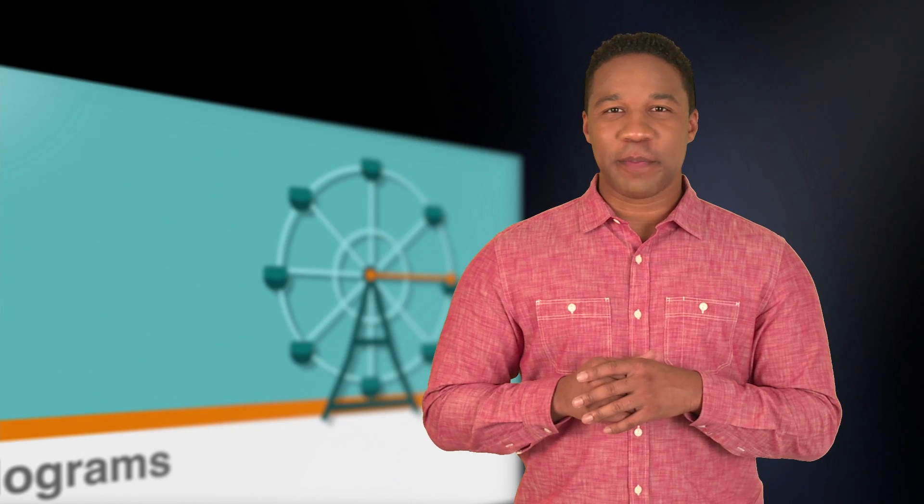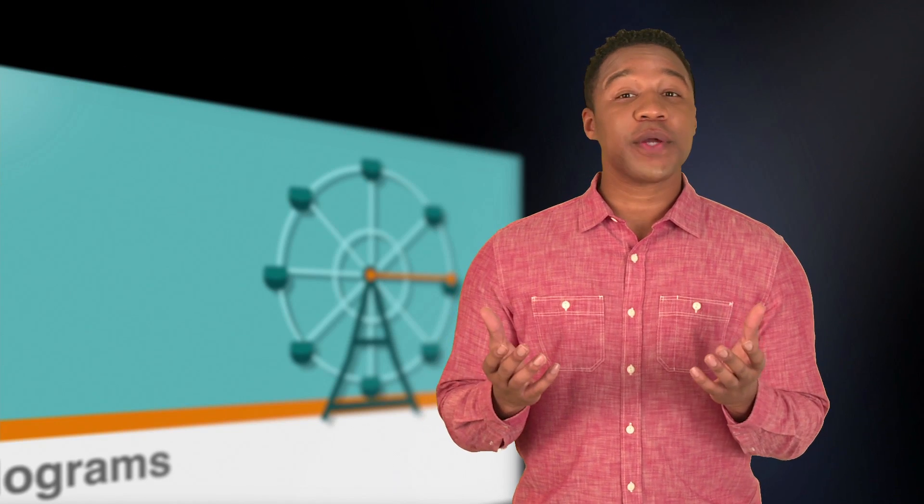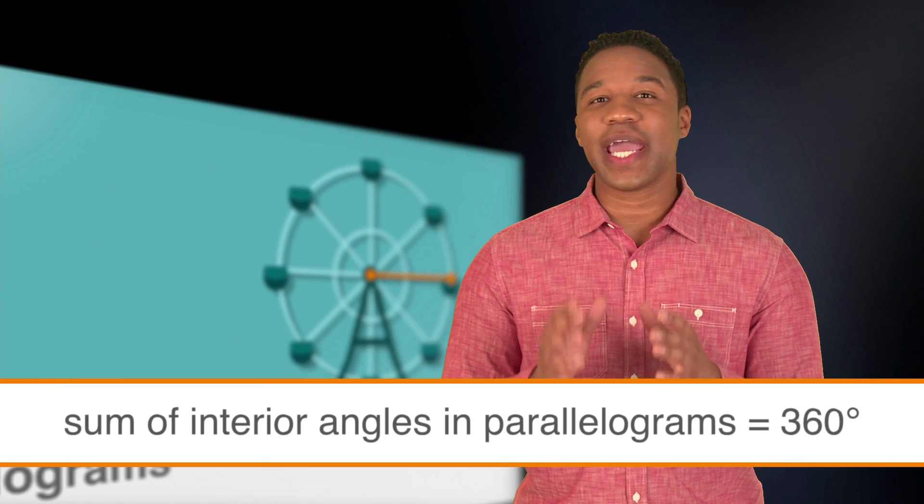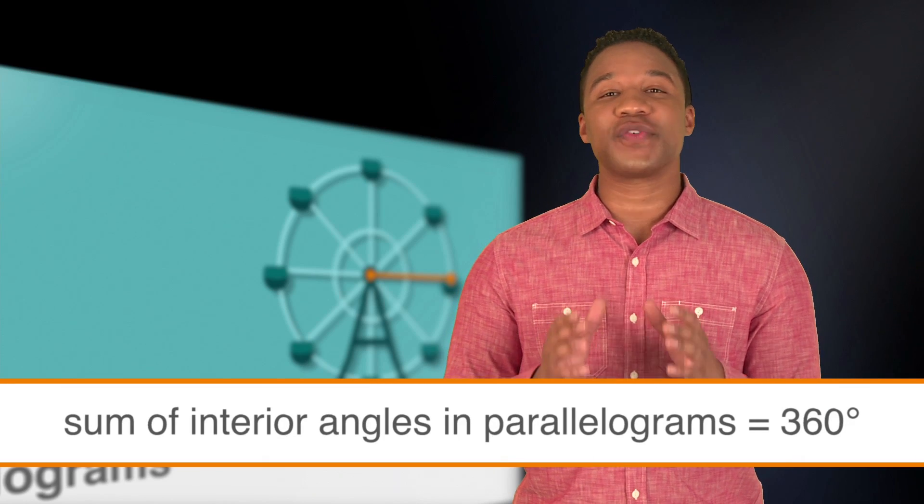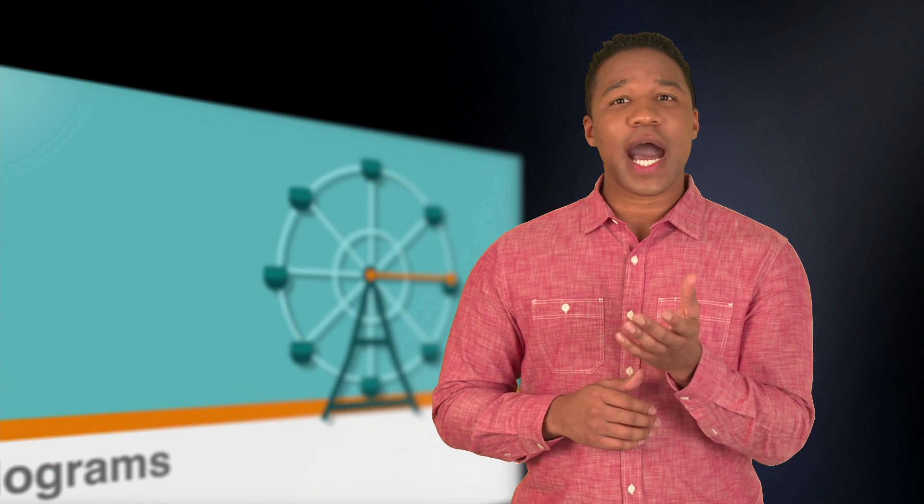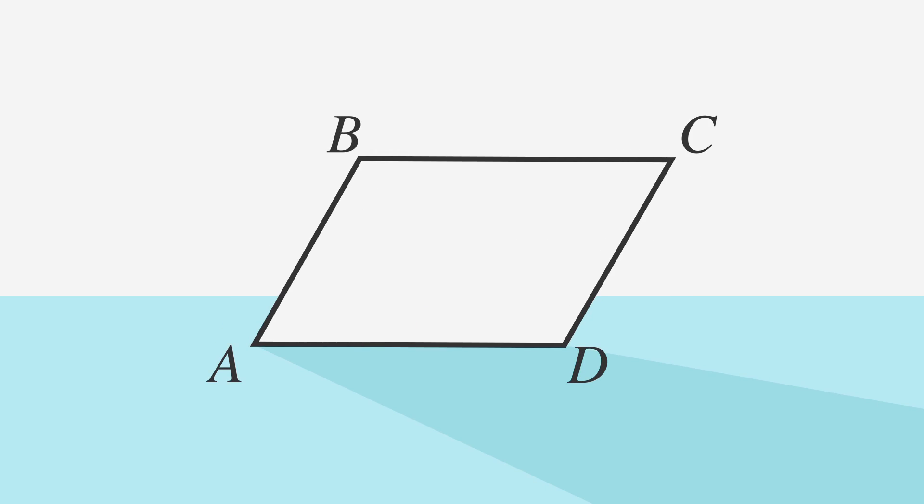One more thing we know about parallelograms. Because all parallelograms have 4 sides, their interior angles all add up to 360 degrees. Also, opposite angles in a parallelogram are equal. So if the measure of angle A is 60 and the measure of angle B is 120, then the measure of angle C must be 60 and the measure of angle D must be 120.